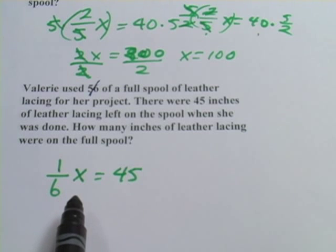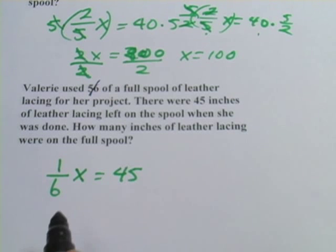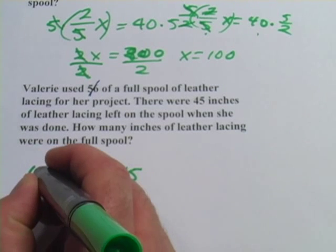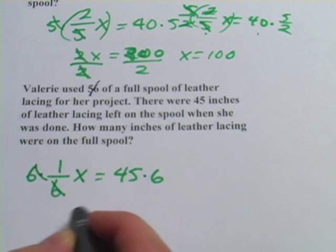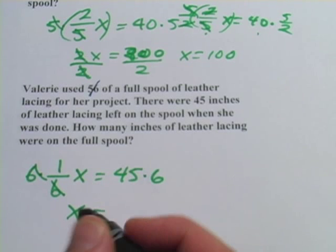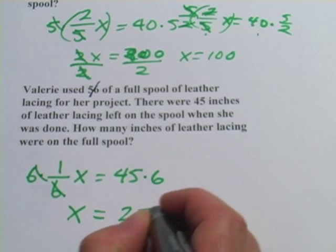And then we go about solving for X just like we did with the other problems. In this case, we need to multiply by six to get rid of the one-sixth here. Multiply both sides by six. Those sixes cancel. We get just X over here. And 45 times 6 is 270 inches.